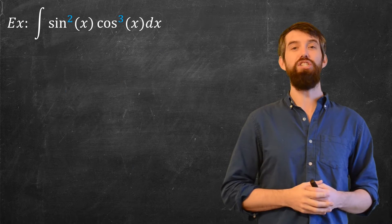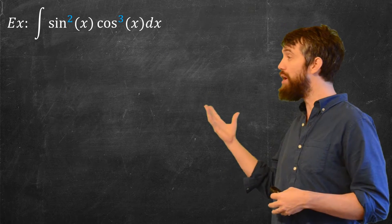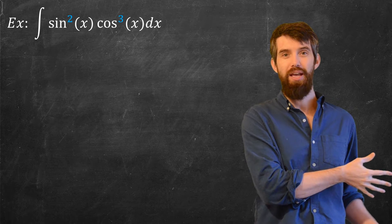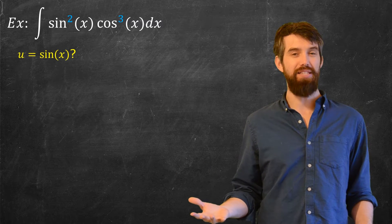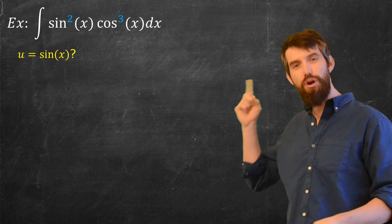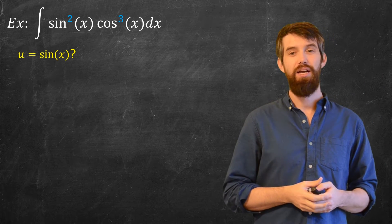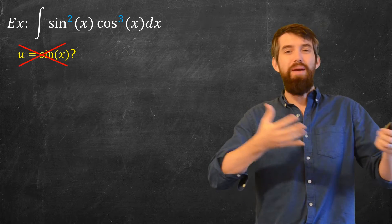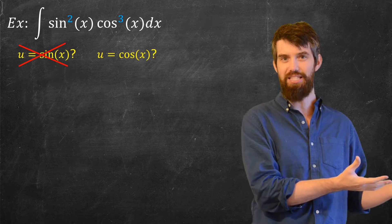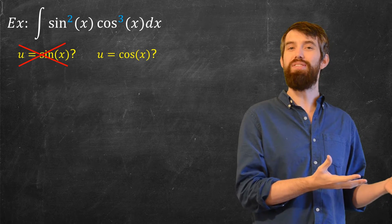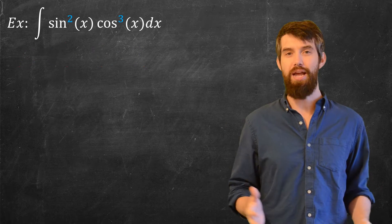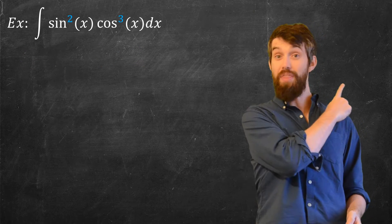But if I make it just a tiny bit more complicated—sine squared cos cubed—notice that I cannot do that anymore. If I try to make u equal to sine of x, then my du is cos of x, but I don't just have cos of x dx. I have cos cubed of x dx. So this doesn't work. If I try to make my u the cosine of x, then my du is minus sine of x dx. But I don't have just a single copy of sine. I have two copies of sine. Again, this does not work. So what can I do? Well, I'm going to employ that identity.